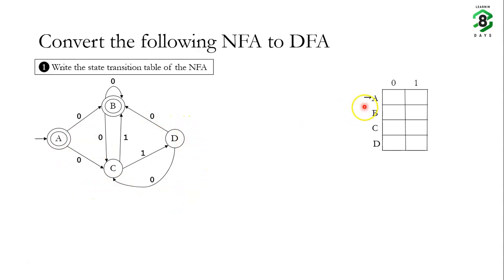This NFA has four states: A, B, C, and D. A is the initial state as well as one of the final states, and B is the other final state, as we can see in this diagram.